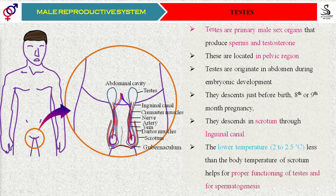Students, I told you that both testes require 2 to 2.5 degrees Celsius less temperature than the normal body temperature. The normal body temperature is 37 degrees Celsius, so approximately 34.5 to 35 degrees Celsius is the temperature required for spermatogenesis.